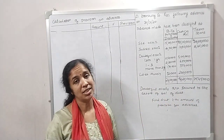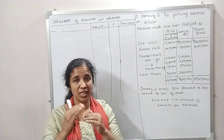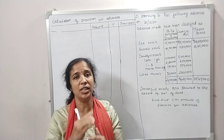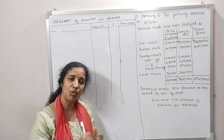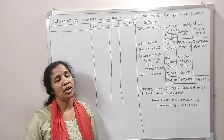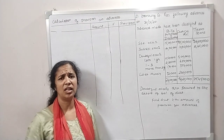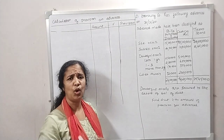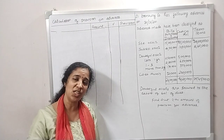Doubtful assets are secured to the extent of 60% of due. Doubtful assets are secured. We divide doubtful assets into secured assets and unsecured assets. Secured assets are secured against security.